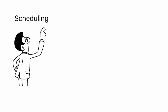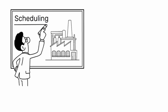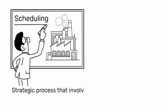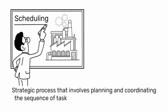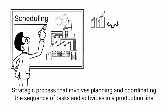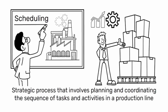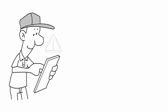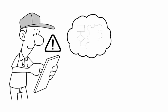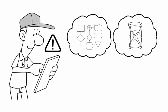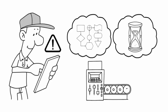Scheduling in the context of industrial engineering and lean manufacturing is a strategic process that involves planning and coordinating the sequence of tasks and activities in a production line to optimize efficiency and productivity. It is a critical component of lean manufacturing as it directly impacts the flow of work, lead times, and overall operational efficiency.